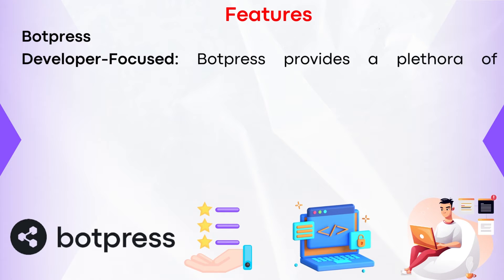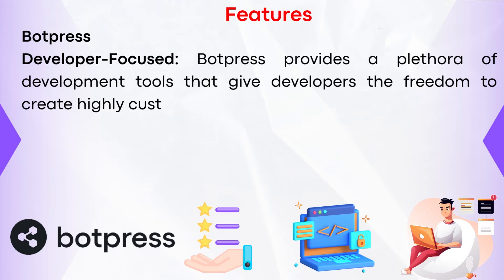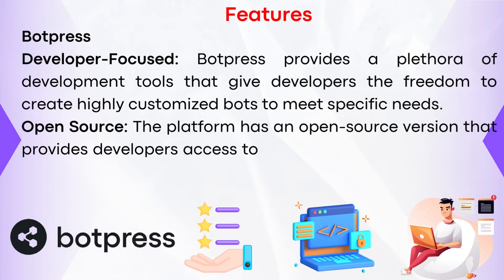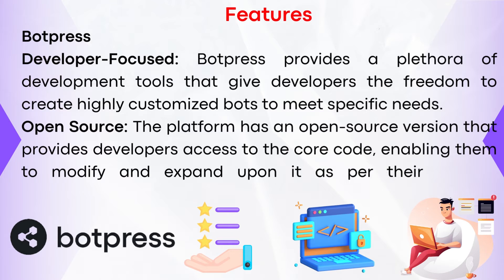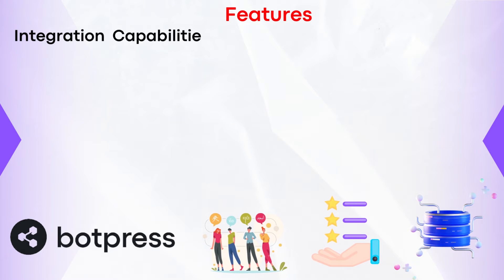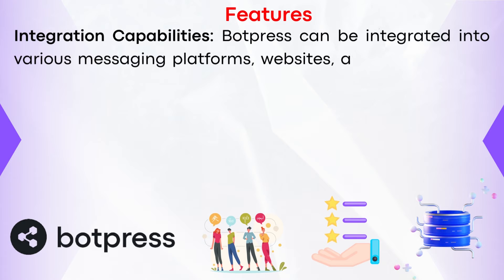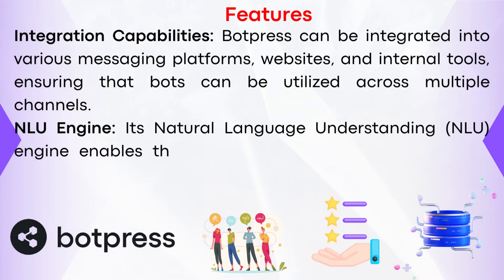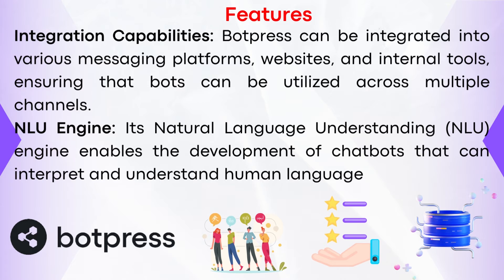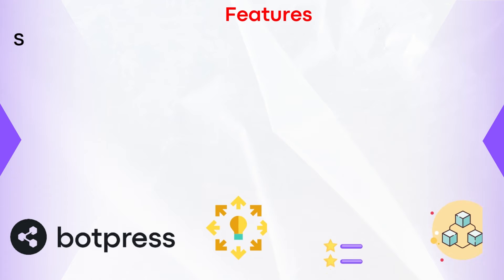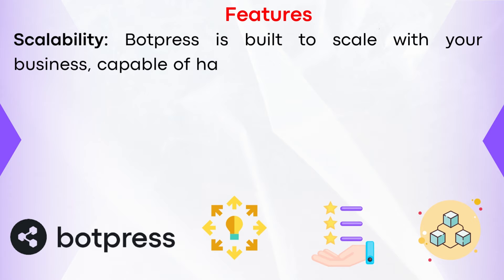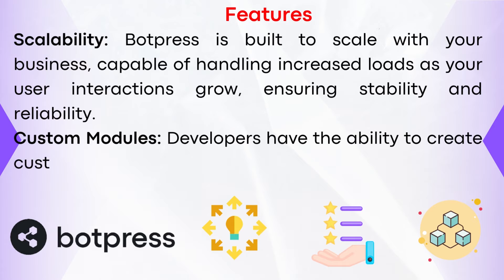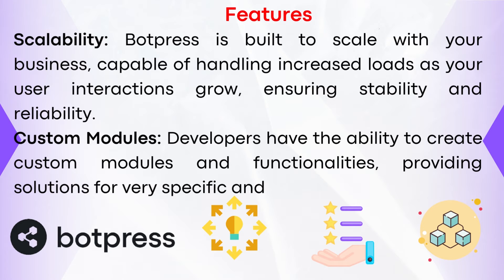Botpress. Number one, developer-focused — Botpress provides a plethora of development tools that give developers the freedom to create highly customized bots to meet specific needs. Number two, open source — the platform has an open-source version that provides developers access to the core code, enabling them to modify and expand upon it. Number three, integration capabilities — Botpress can be integrated into various messaging platforms, websites, and internal tools, ensuring that bots can be utilized across multiple channels. Number four, NLU engine — its natural language understanding engine enables the development of chatbots that can interpret and understand human language, enabling more natural interactions with users. Number five, scalability — Botpress is built to scale with your business, capable of handling increased loads as your interactions grow, ensuring stability and reliability. Number six, custom modules — developers have the ability to create custom modules and functionalities, providing solutions for very specific niche requirements.